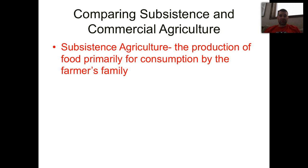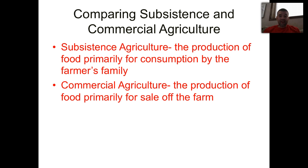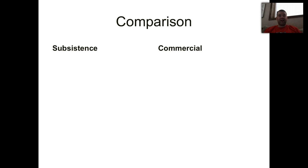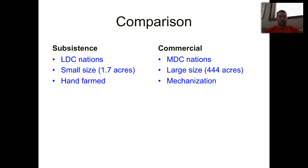To give a general understanding of the difference: subsistence agriculture is the production of food primarily for consumption — it's produced basically for survival or to better those who are growing it. Commercial agriculture is where the majority, if not all, of the production is going to be sold off the farm. That's the most significant difference. Generally, you're going to see commercial agriculture in more developed countries, while in lesser developed countries or LDCs, we see predominantly subsistence agriculture. About a quarter of the world's population survives on subsistence agriculture.